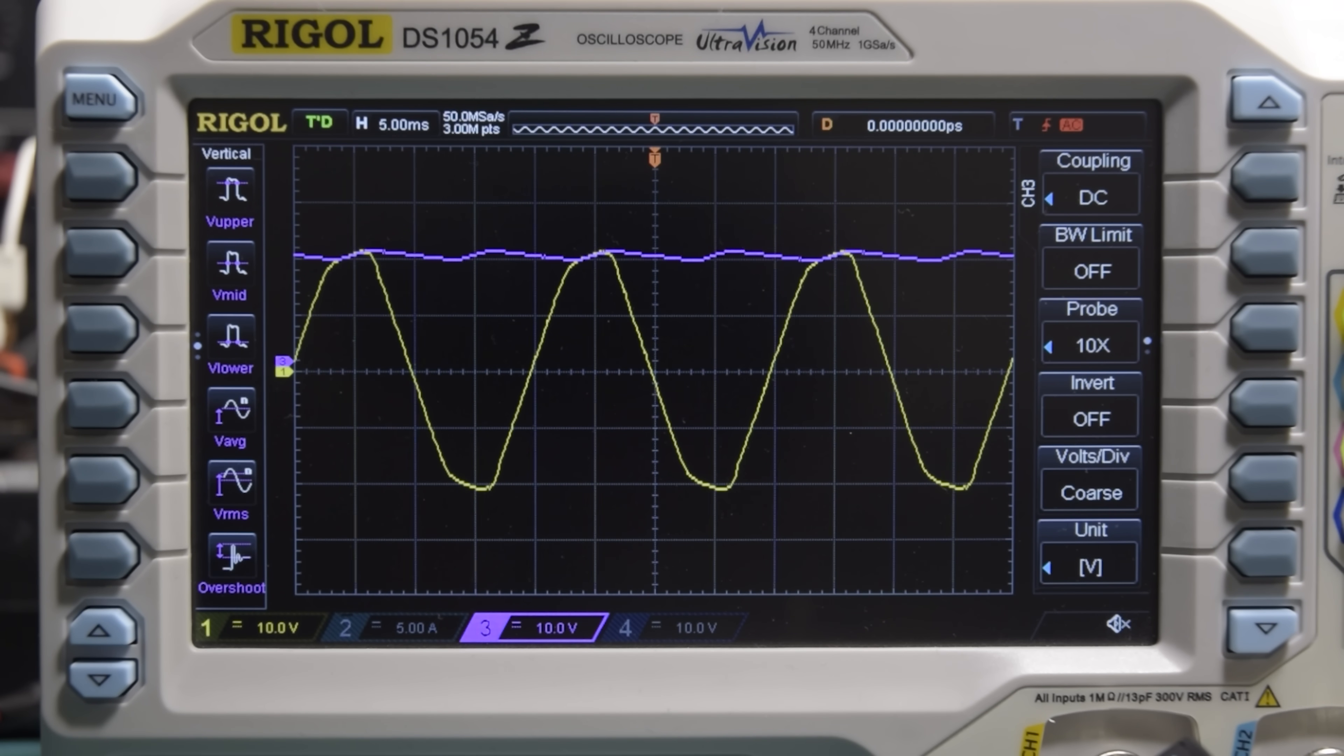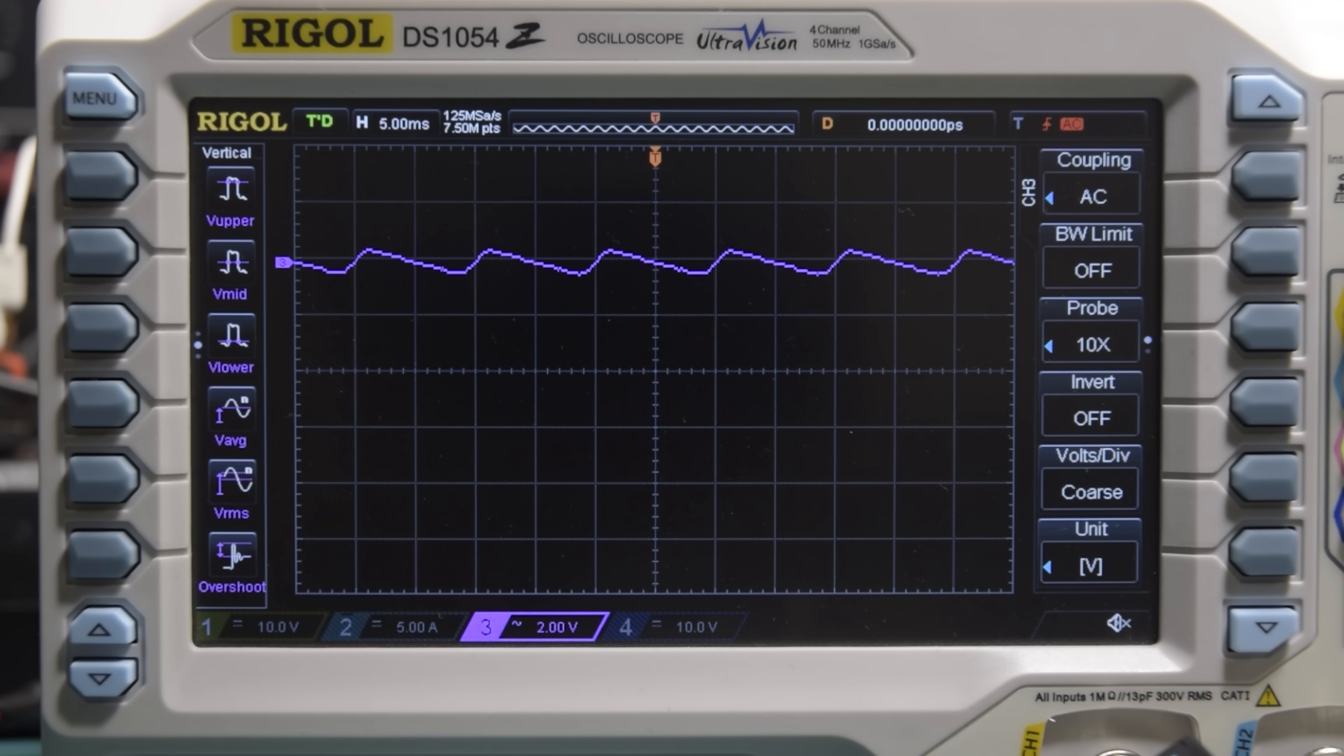Of course, there's only so much energy a capacitor can hold, so the bigger the load, the more that voltage will droop down before getting charged back up again at the next peak of the AC. And it's that part, the charging up of the capacitor, which is where the big problem lies.